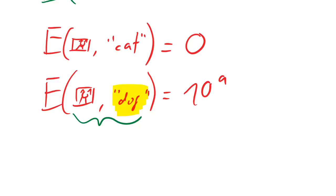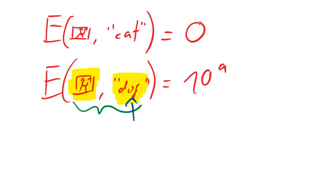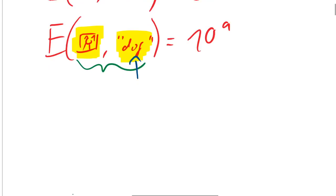So you can change any of the two inputs to make the classifier happy. Usually we're concerned with changing the label — it's like, tell me which label do I need to input to make you happy. If we make the labels differentiable — we input a softmax distribution over labels — we can use gradient descent to find a label that would make the energy function happy. But we can also optimize the image to make it compatible with the dog label. That's what deep dream does — it optimizes the input image for a particular label.